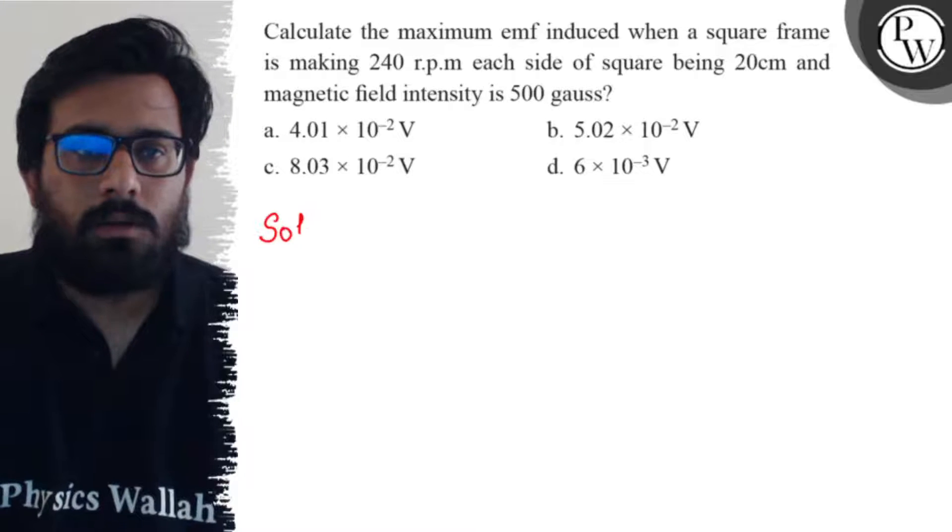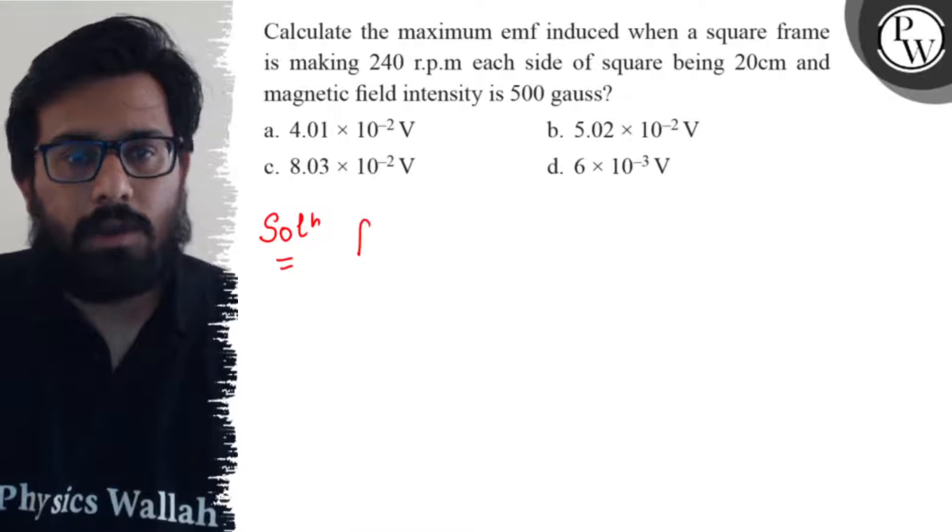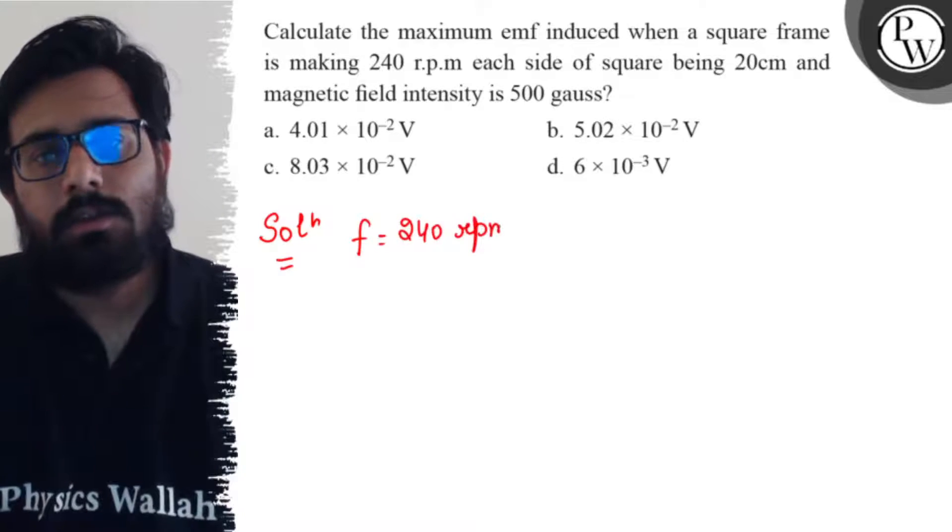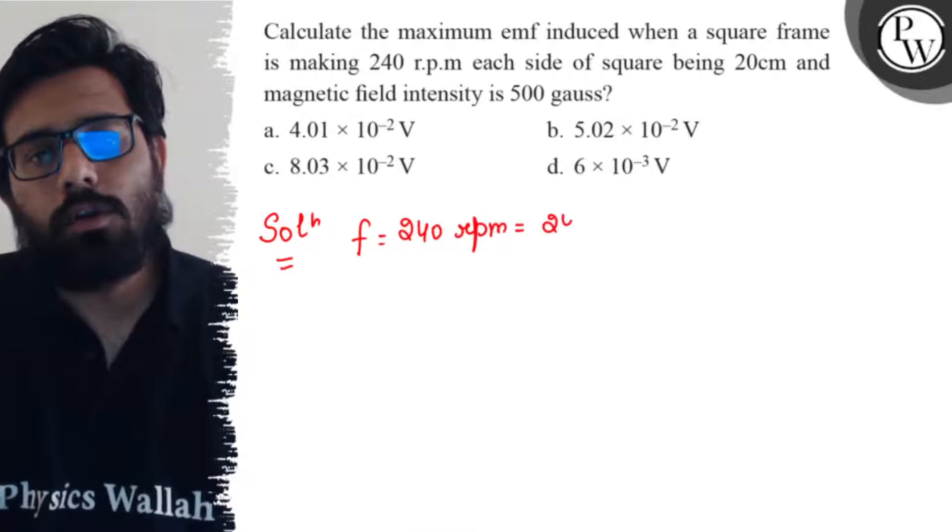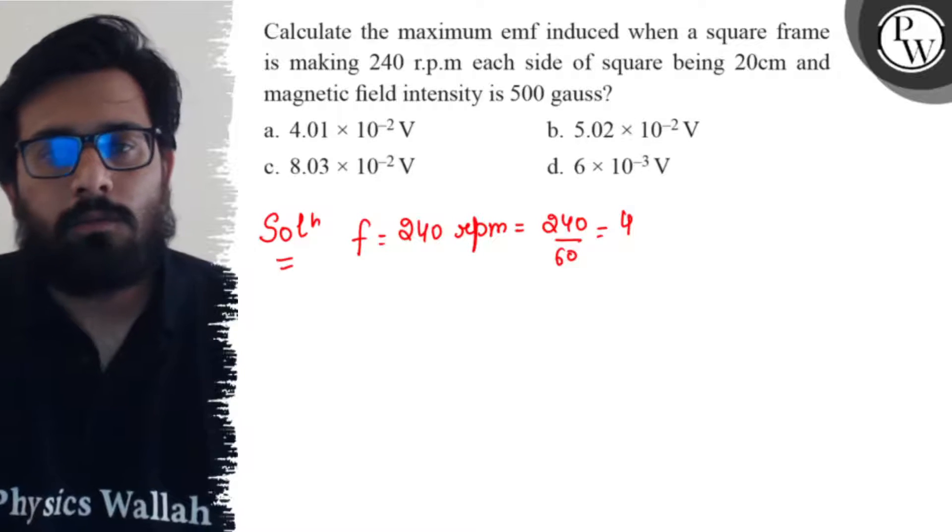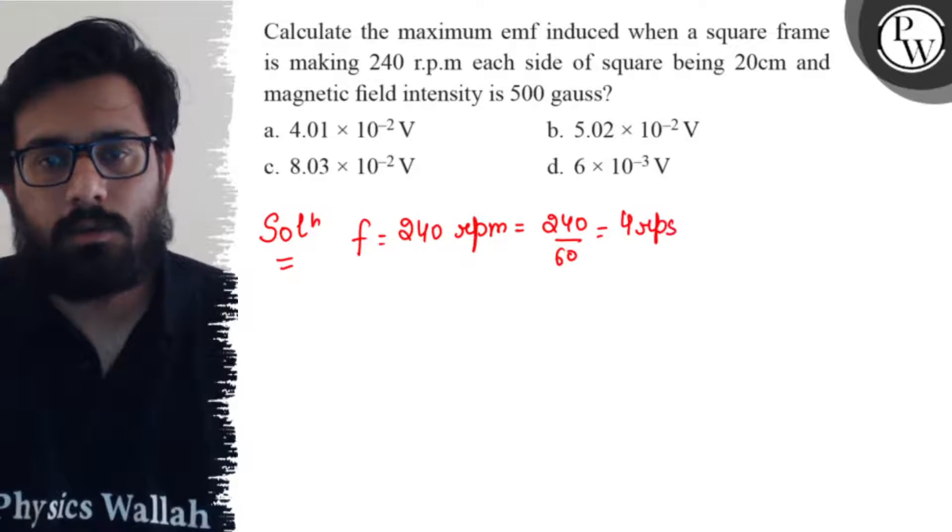So in this question, what are the given things we have? Frequency as 240 rpm converting it to seconds. So 240 divided by 60, you can say it simply 4 rps. So frequency we have.